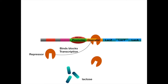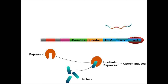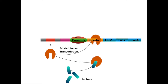However, when lactose is present, it will bind to the repressor and induce the operon to transcribe the genes. Where does the repressor come from? A gene that is even further upstream from the promoter is the lac I gene. This encodes for the repressor protein that will bind to the operator.